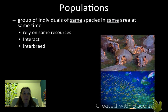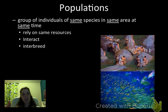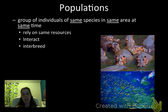We're going to be looking at how the biotic and abiotic factors influence the population's density, distribution, and age structure. All of these individuals are going to be relying on the same resources, interacting with each other — those can be helpful or harmful interactions — and they're most likely going to be interbreeding, because most organisms breed within the population they live in.